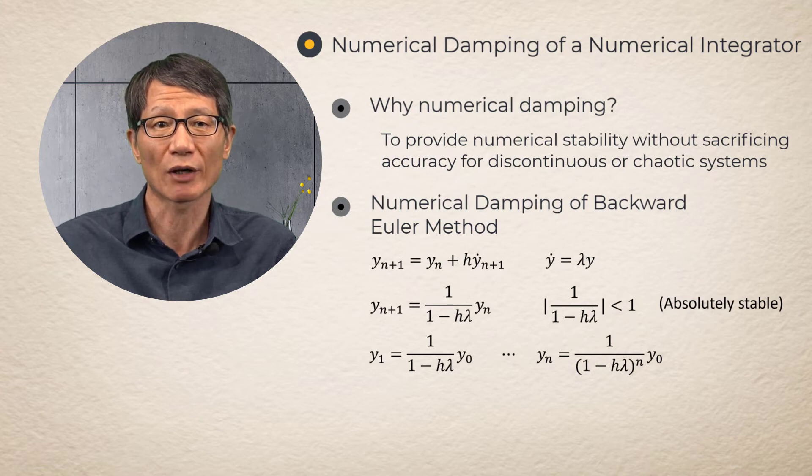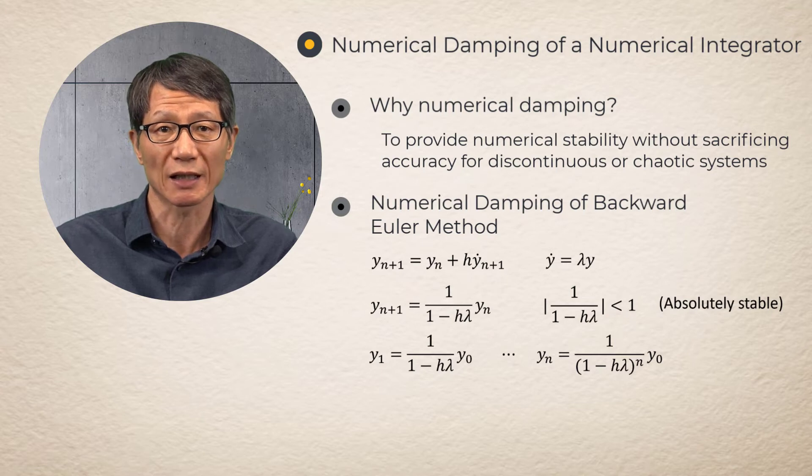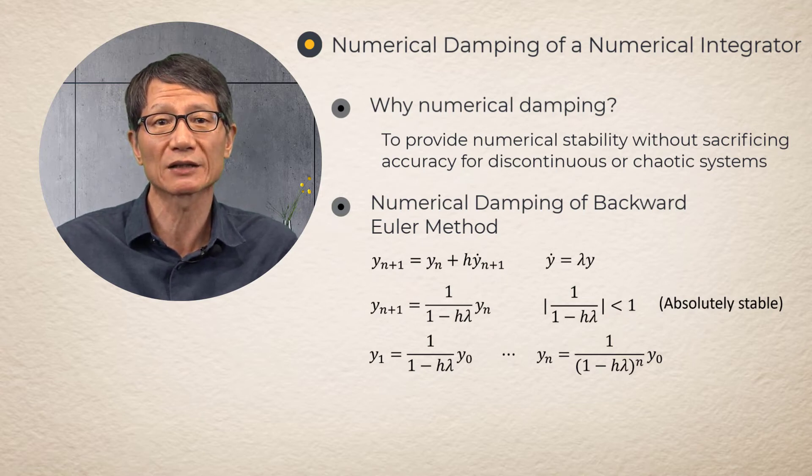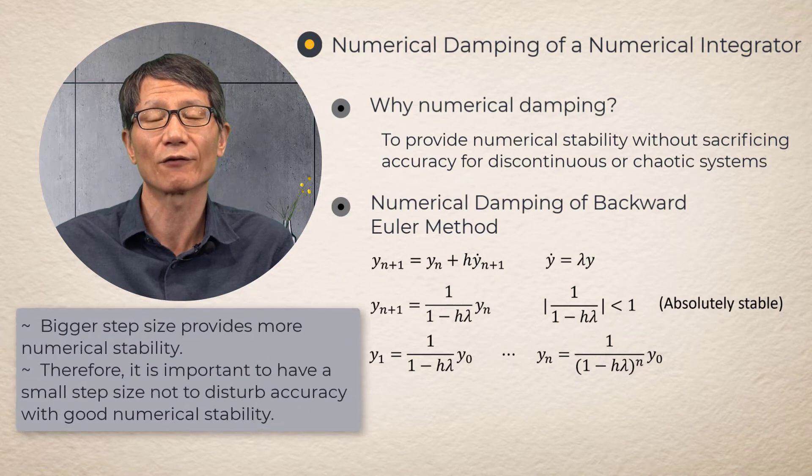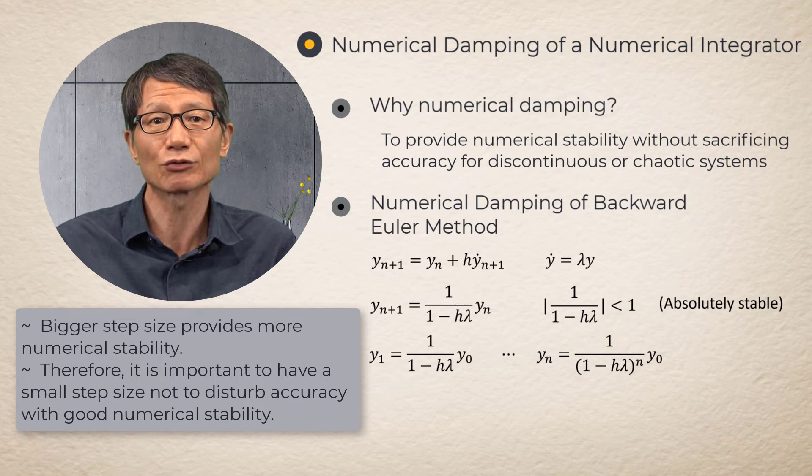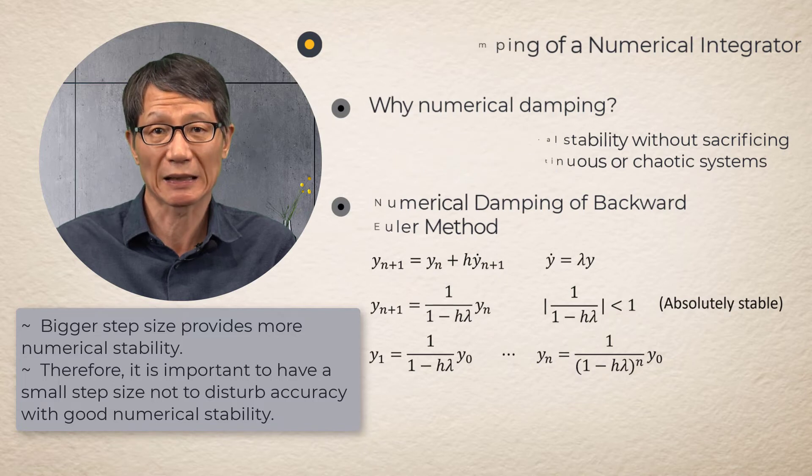The numerical damping can affect the accuracy of numerical integration. Large numerical damping provides greater numerical stability, which results in more accurate solutions. However, too much numerical damping introduces inaccuracy. The amount of the numerical damping is controlled by the integration step size. Therefore, it is important to have numerical damping and a suitable step size, not to deteriorate the accuracy with enough amount of stability.